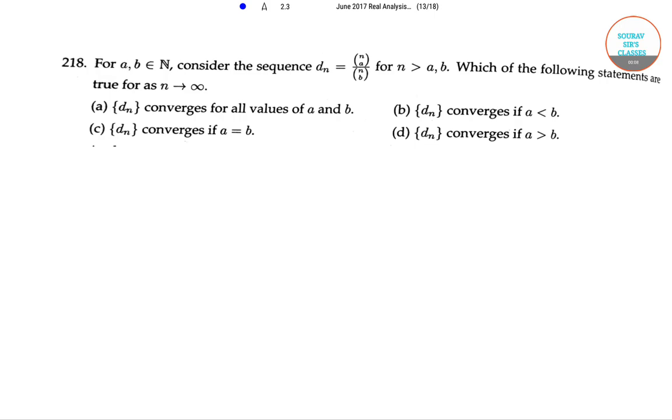The question is, for a, b belonging to natural numbers, consider the sequence d_n equals nCa divided by nCb, for n ≥ a, b. Which of the following statements are true as n tends to infinity? Option A: d_n converges for all values of a and b.